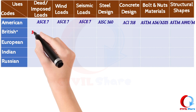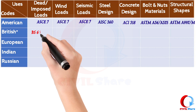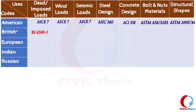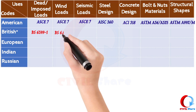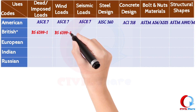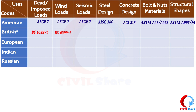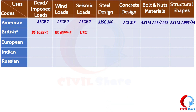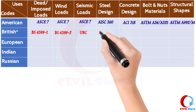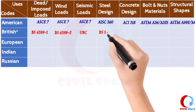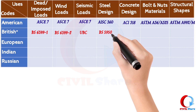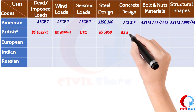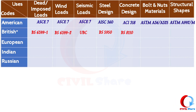Let's see British Codes. BS 6399 Part 1, 1996 is used for code of practice for dead and imposed loads. BS 6399 Part 2, 1997 is used for code of practice for wind loads. Uniform Building Code (UBC) guidelines are used for seismic design. BS 5950 Part 1, 2000 code of practice is used for structural use of steelwork in buildings — design of rolled and welded sections. BS 8110 Part 1, 1997 code of practice is used for structural use of concrete — design and construction.